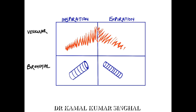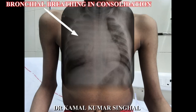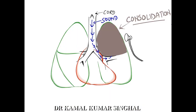In bronchial breathing, the inspiratory and expiratory phases are equal and there is a gap between the two phases of respiration. Bronchial breathing is heard when sound generated in the central airways is transmitted more or less unchanged through the lung substance. This happens in consolidation because the alveoli, which are normally filled with air and dampen sound transmission, are now relatively solid and conduct the sound straight to the chest wall.